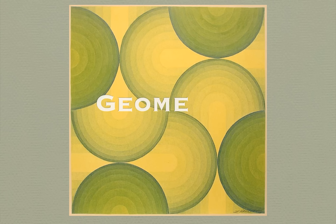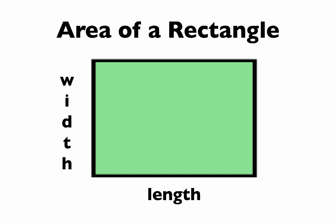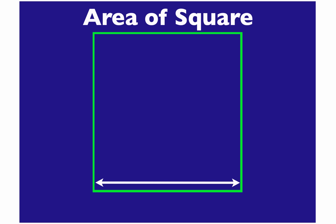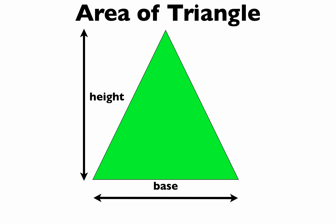Let's learn some geometry. The area of a rectangle equals length times width. The area of a square equals the length of its side squared, s squared. The area of a triangle equals one-half base times height.